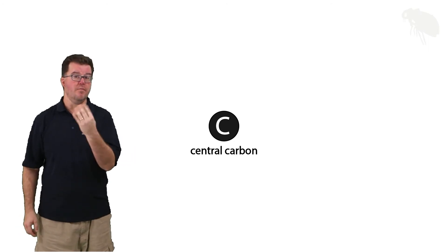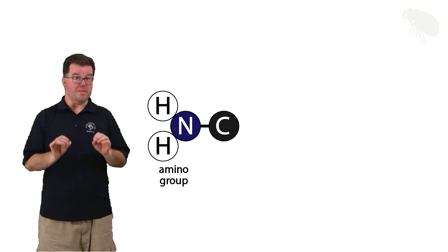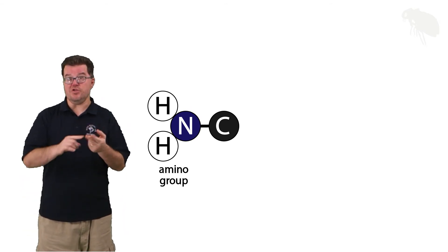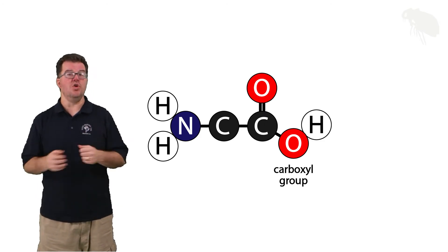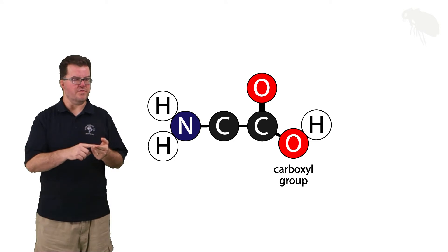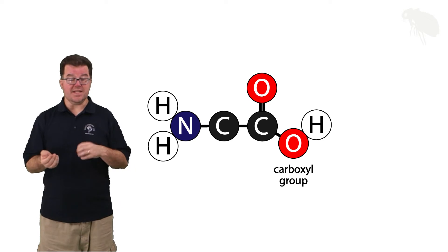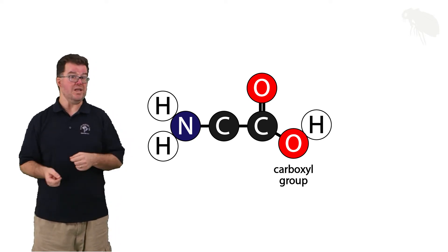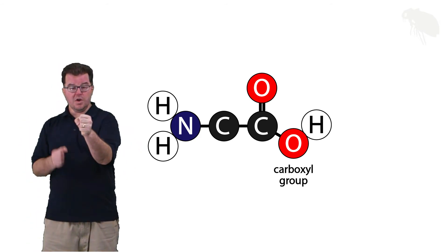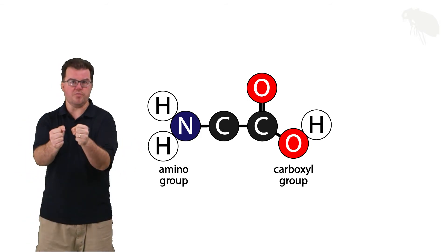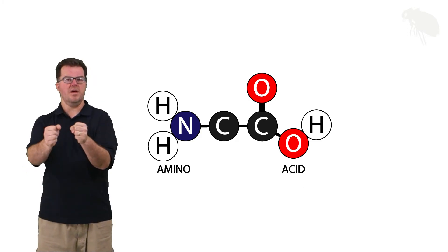Carbon, you should recall, can form four covalent bonds. The first of those four bonds is with an amino group — an amino group which is alkaline and hydrophilic. Directly opposite that amino group is a carboxyl group, which is acidic and hydrophilic. That means every amino acid is both a weak acid and a weak base at the same time, depending on environmental conditions. And we also now have its name: a central carbon with an alkaline amino group on one side and directly opposite an acidic carboxyl group — an amino acid.